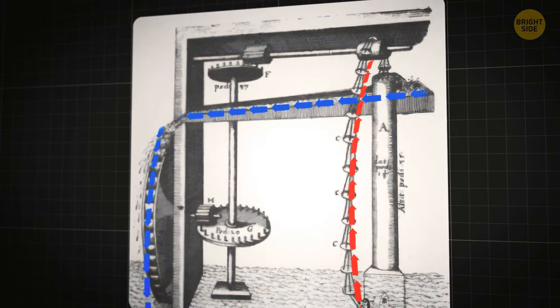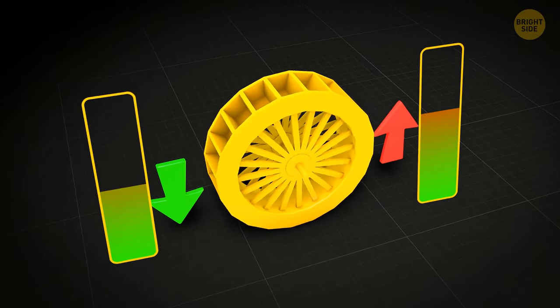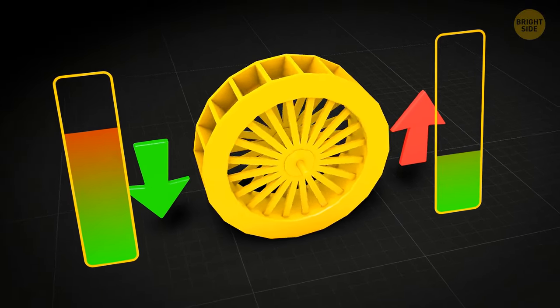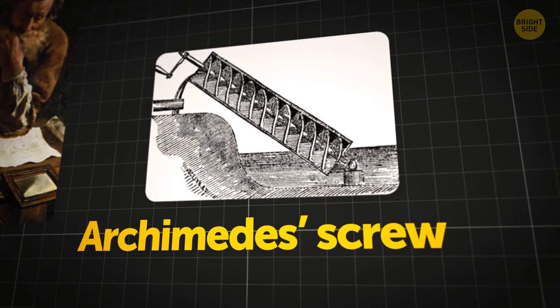Sounds good on paper, but this kind of machine wouldn't work. The energy of the falling water would never be greater than the energy needed to get the water up to the reservoir. The English physicist based the idea on Archimedes' screw.